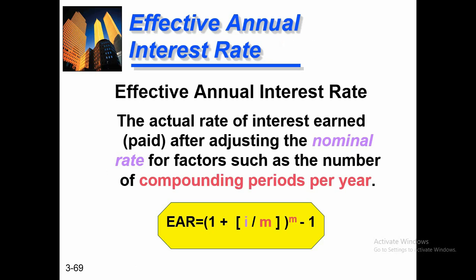Now we will learn about the Effective Annual Rate (EAR) and how it affects your investments and return. The EAR is the actual rate of interest earned or paid after adjusting the nominal rate for factors such as the number of compounding periods per year. The formula is: EAR equals (1 plus i divided by M) raised to the power M, minus 1.